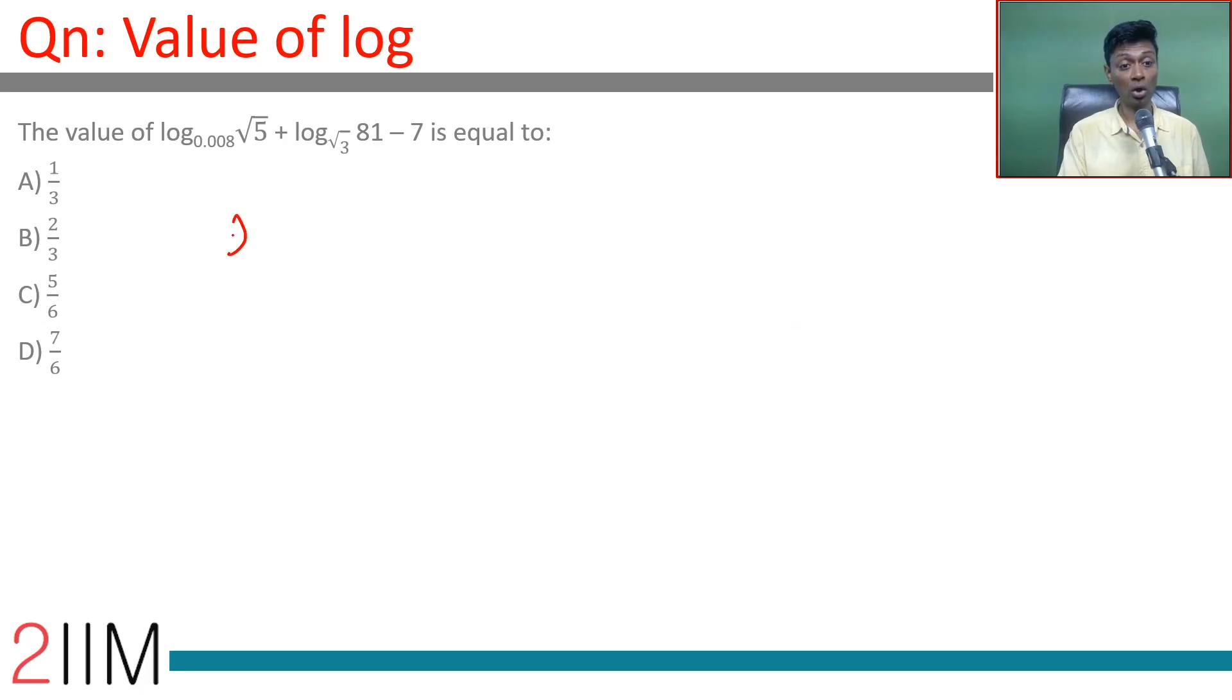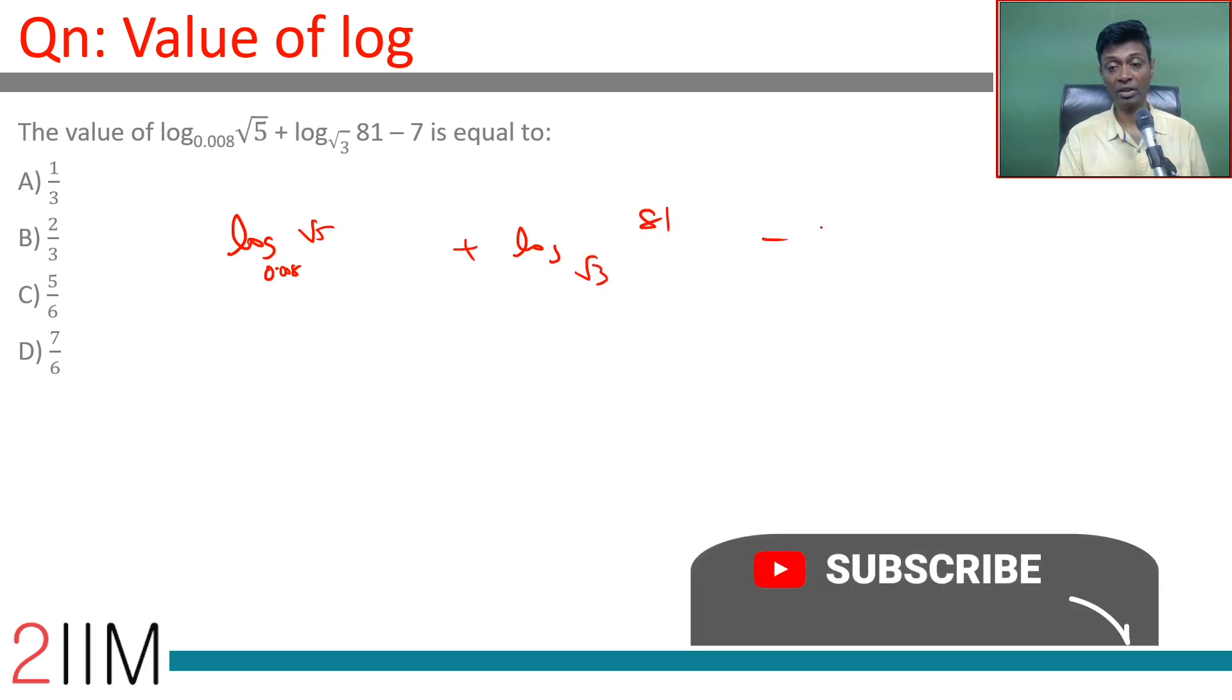The value of log root 5 to the base 0.008 plus log 81 to the base root 3 minus 7.